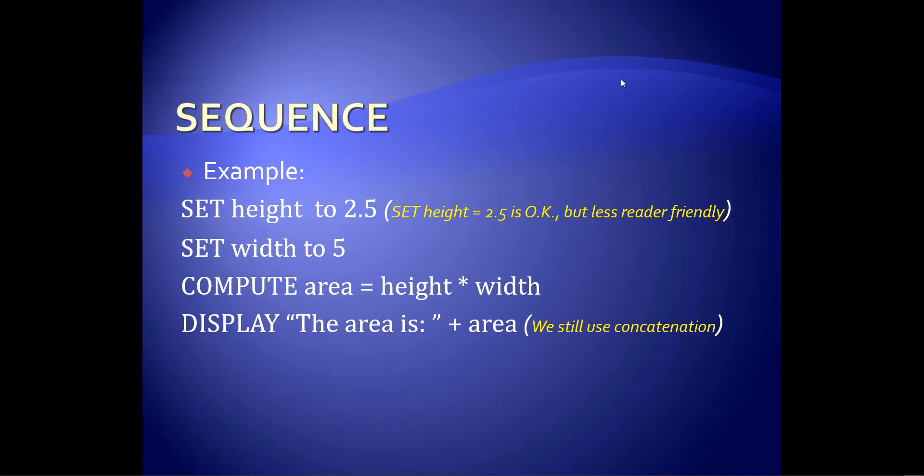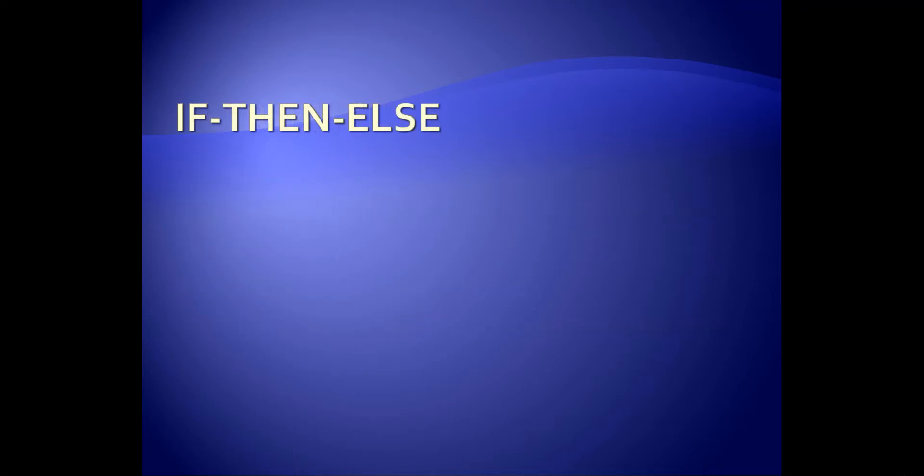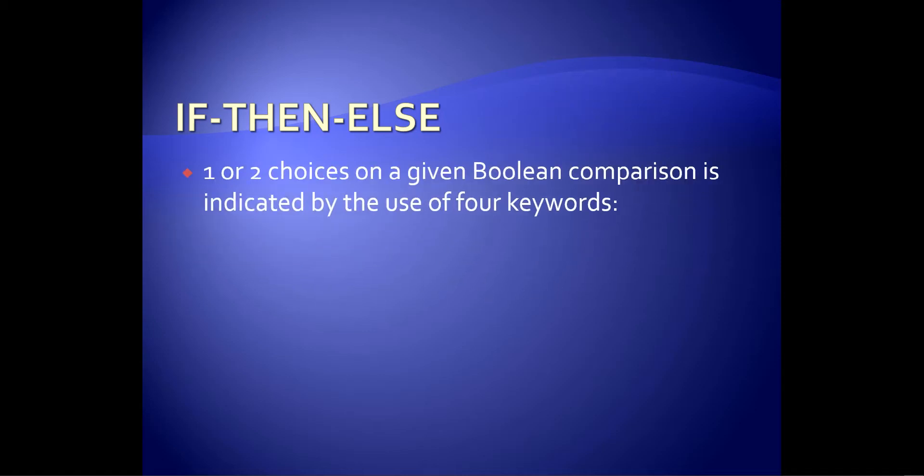Well, let's keep moving on. So this is the last one I'm going to do in this video. And then we're going to take a break. And we'll go on to the next video. So this is for our simple selection, if, then, else. We're making one or two choices. So this is just basic Boolean comparisons. We're going to need four key words to actually do this. Very simple. If, then, else, and end if.